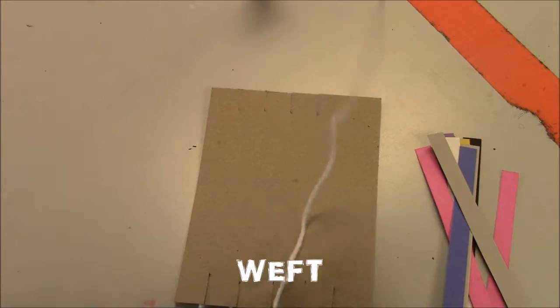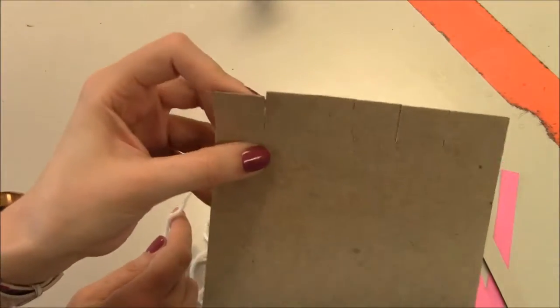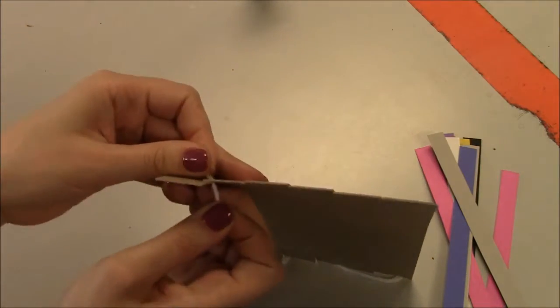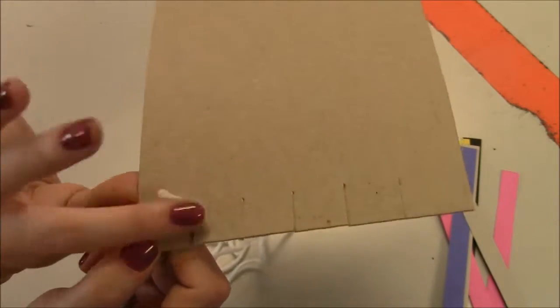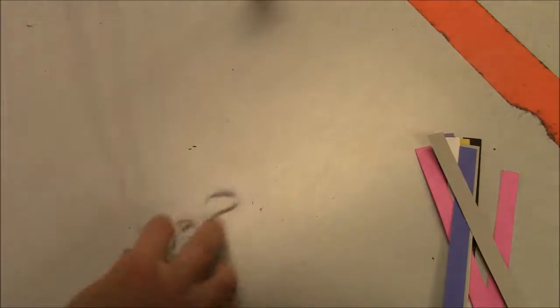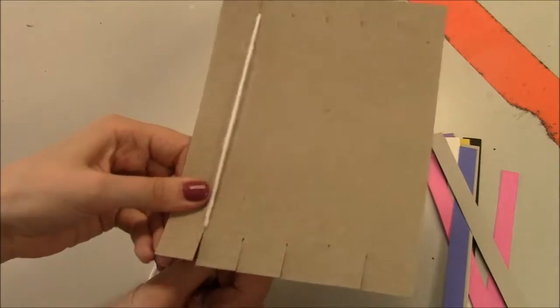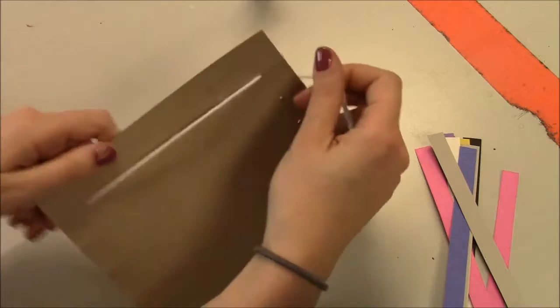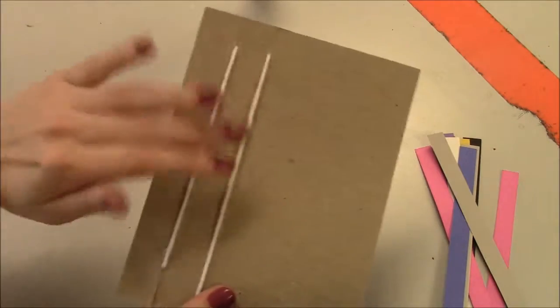So first I'm going to take my warp and I'm going to put it in the first slot, leaving a tiny little tail. The tiny little tail is the back side. So taking the long part of my warp, I'm going to hold it down, put it into my first slot, and wrap it around the back until I get to my second slot, making sure my warp strings are tight.